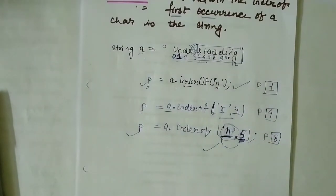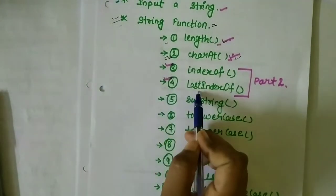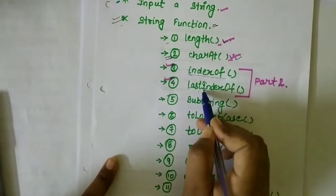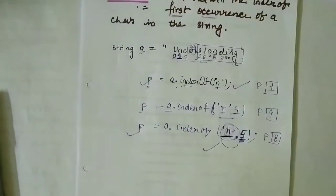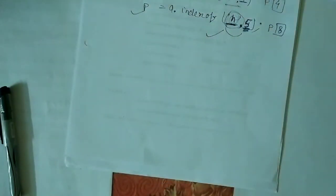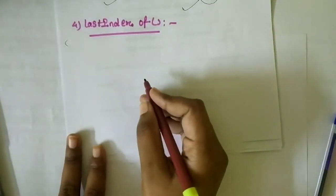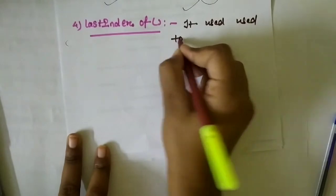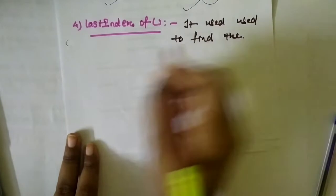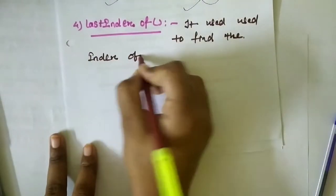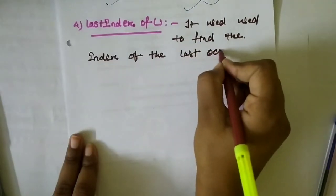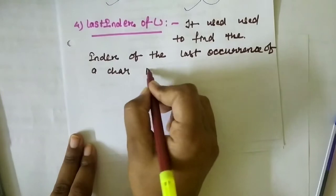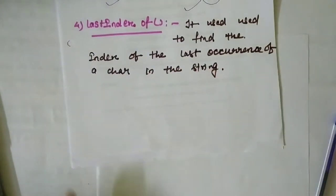Next, let's move to the lastIndexOf function. Both indexOf and lastIndexOf are string functions, but what is the difference? The definition of lastIndexOf is: it is used to find the index of the last occurrence of a character in the string.